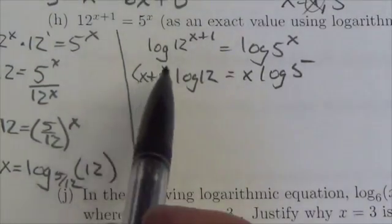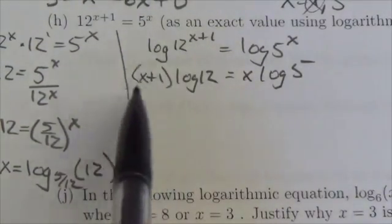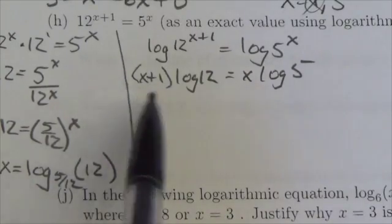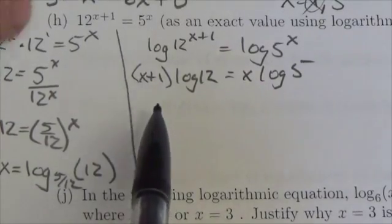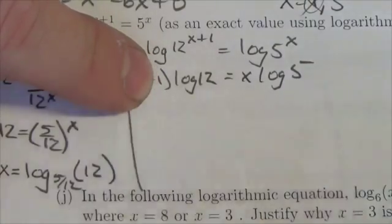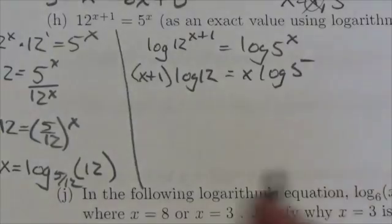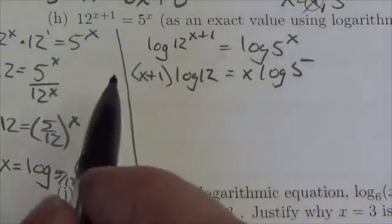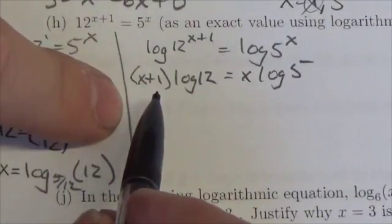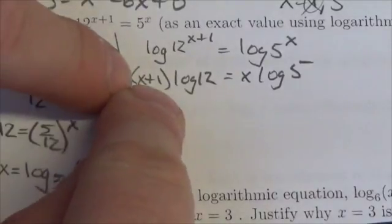Now I gotta caution you, when you bring that exponent down you need to put that in brackets because remember x plus 1 is the exponent. If you don't put the brackets there then you're making it just the 1 that's the exponent. You got to put parentheses around that to identify that that whole thing is the exponent.